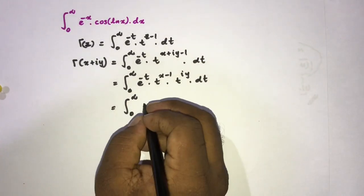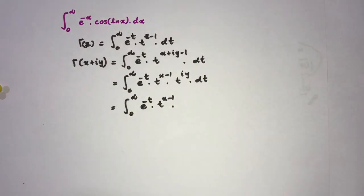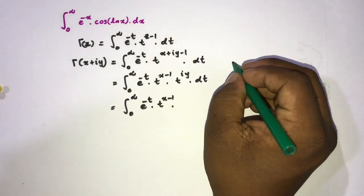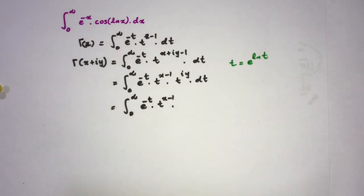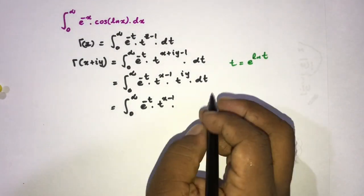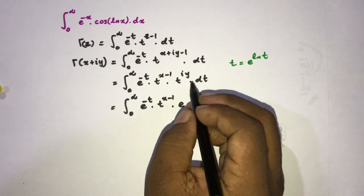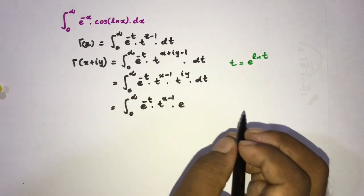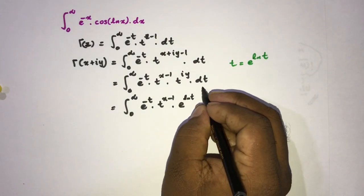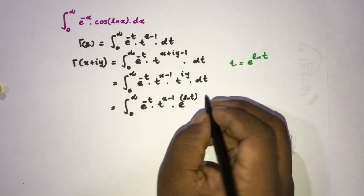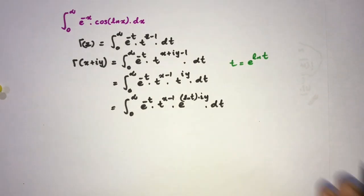We have the integral from zero to infinity of e to the minus t times t to the x minus 1 times t to the iy. We can write t as e to the natural log of t, so t to the iy becomes e to the natural log of t times iy.